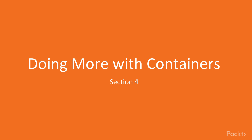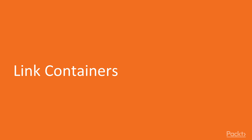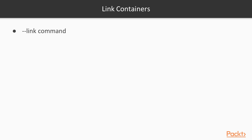This is an introduction video for Section 4: Doing More with Containers. In this video, we will look at how you can link containers to each other. Containers are linked via commands used at runtime. To link the containers, we will use the --link switch command. In our example, we will be using WordPress with MySQL, both deployed in different containers. We will be linking containers via container name, not with the IP address.